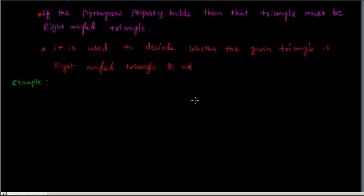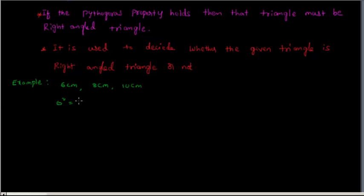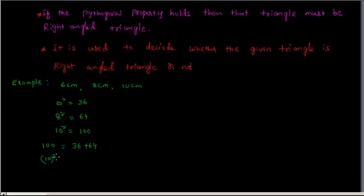Let's see an example. The three sides of a triangle are given as 6 cm, 8 cm, and 10 cm. First, we square all three numbers: 6 squared equals 36, 8 squared equals 64, and 10 squared equals 100. It is clear that 100 equals 36 plus 64 — that is, 10 squared equals 6 squared plus 8 squared.